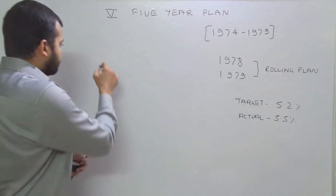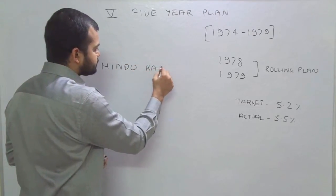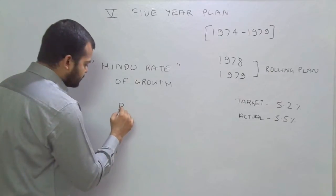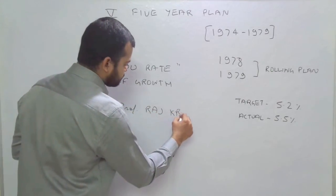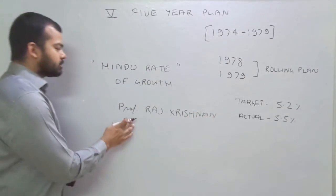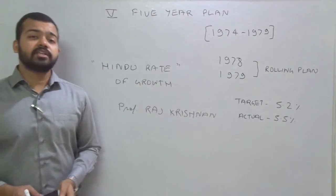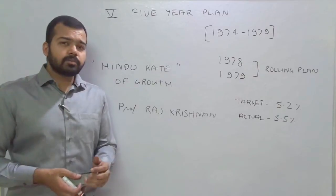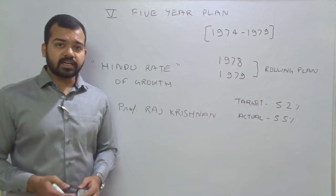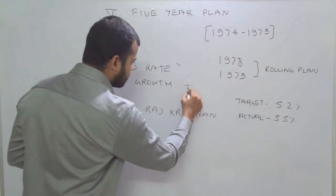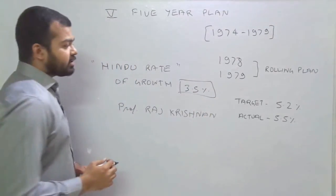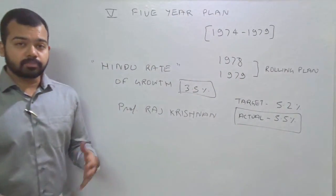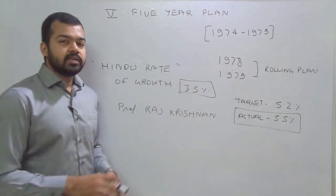That key reason relates to the 'Hindu Rate of Growth,' a term given by Professor Raj Krishna. The Hindu Rate of Growth does not relate to any religion, but refers to the rate of growth of Hindustan. In the first three decades, India was unable to achieve growth above 5%, growing at around 3.5%. In this Five Year Plan, the actual growth rate of 5.5% was achieved, finally solving the Hindu Rate of Growth mystery.